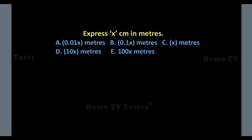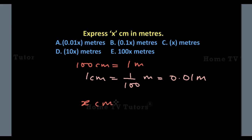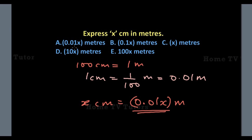Express X cm in meters. For 100 cm we get 1 meter. So 1 cm gives us 1 divided by 100 meters, which is 0.01 meters. That is, for every cm we have 0.01 meters. So to express X cm in meters, we have 0.01x meters. The answer option A is the right answer.